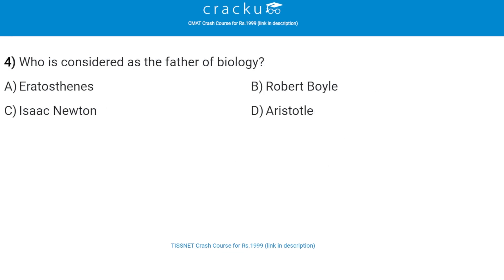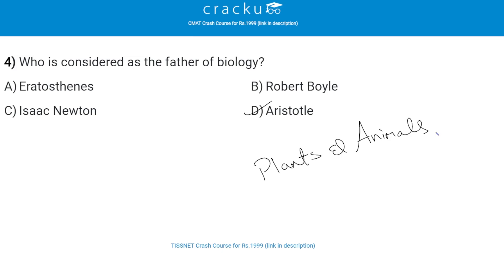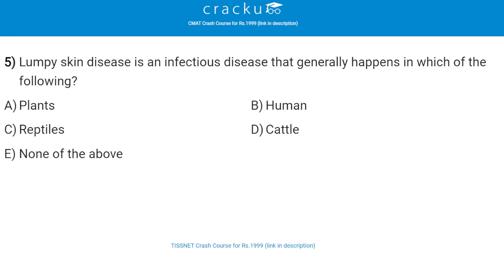Next, who is considered as the father of biology? The correct answer is Aristotle, that is option D. Aristotle revealed his thoughts about various aspects of the life of plants and animals. Therefore, Aristotle is called the father of biology. He was a great Greek philosopher and polymath.